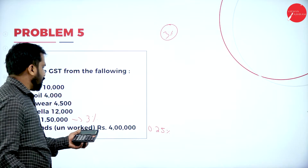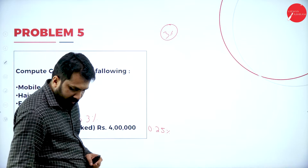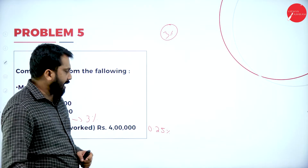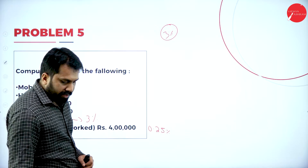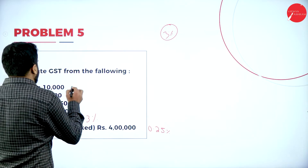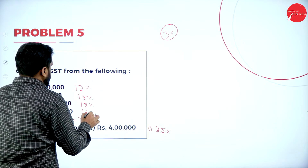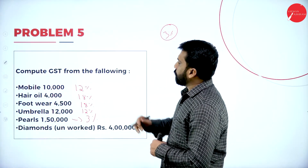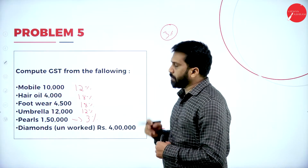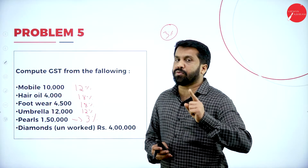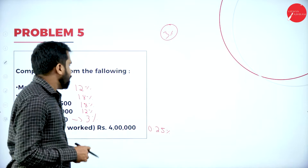The diamond calculation: four lakh into 0.25 percent equals one thousand. Mobile is twelve percent, hair oil eighteen percent, footwear eighteen percent, umbrella twelve percent. Pulse — they have not mentioned unworked, so if it were unworked it would be 0.25 percent — but here it is three percent. So the rates are: mobile twelve percent, hair oil eighteen percent, footwear eighteen percent, umbrella twelve percent, pearls three percent, diamond 0.25 percent.